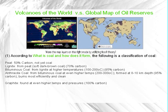According to 'What is coal and how does it form,' the following is a classification of coal: peat is 50% carbon, not yet coal; lignite, from peat, is soft dark brown coal at 70% carbon; bituminous coal, from lignite at higher temperatures around 100–200°C, is 85% carbon.